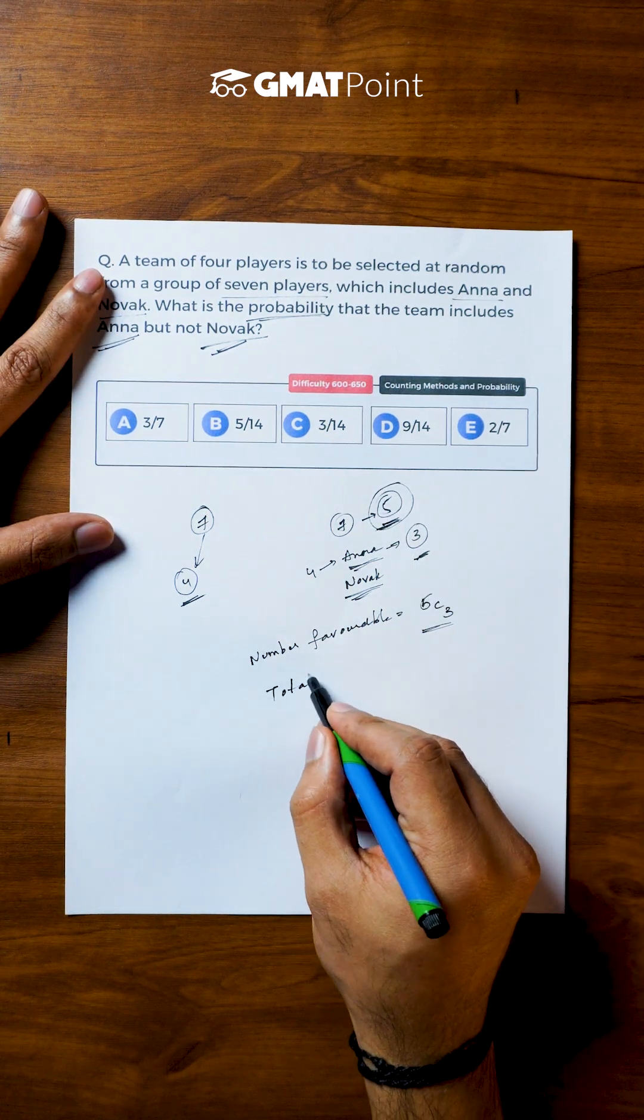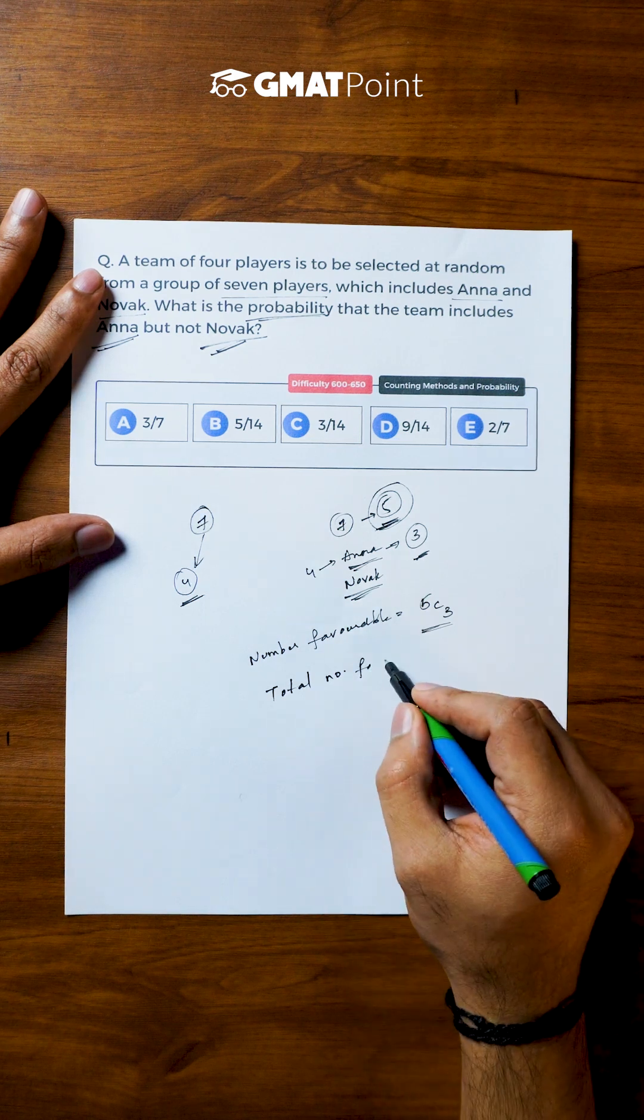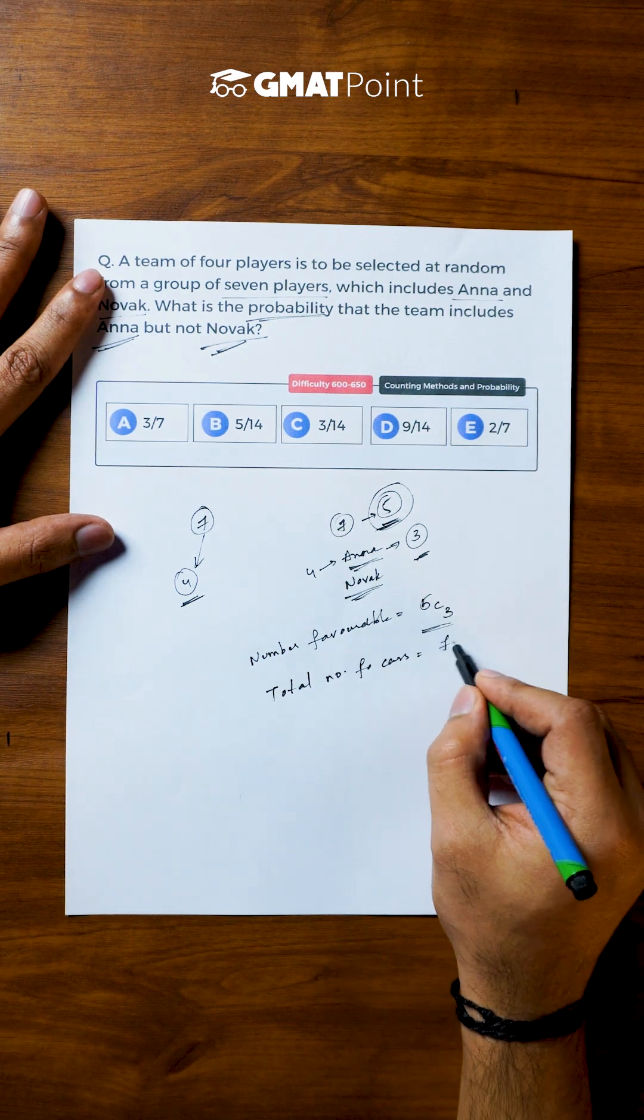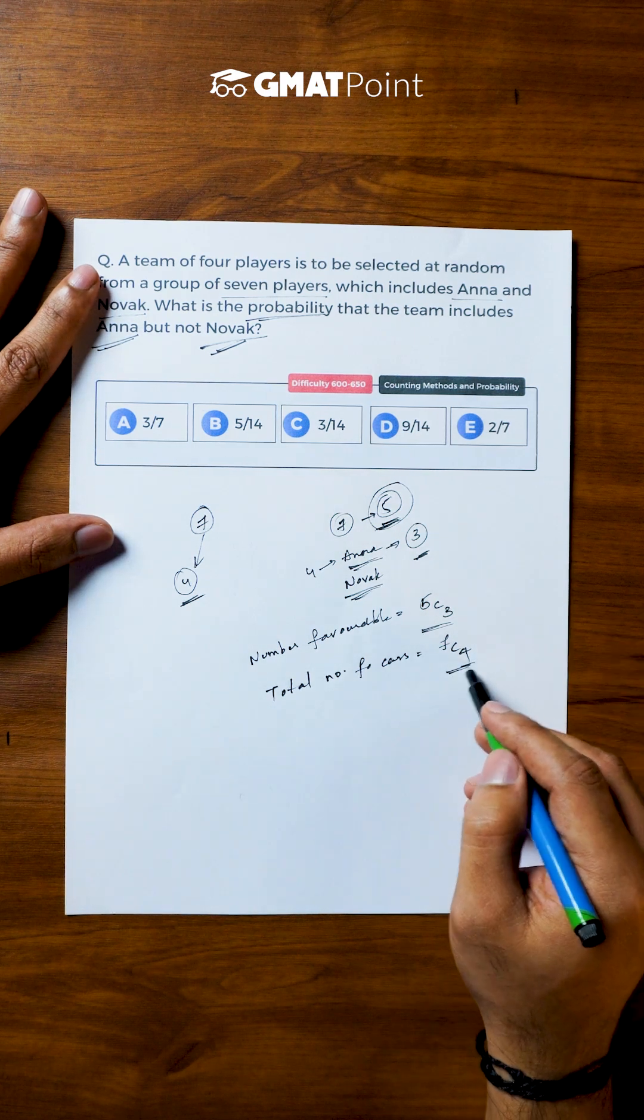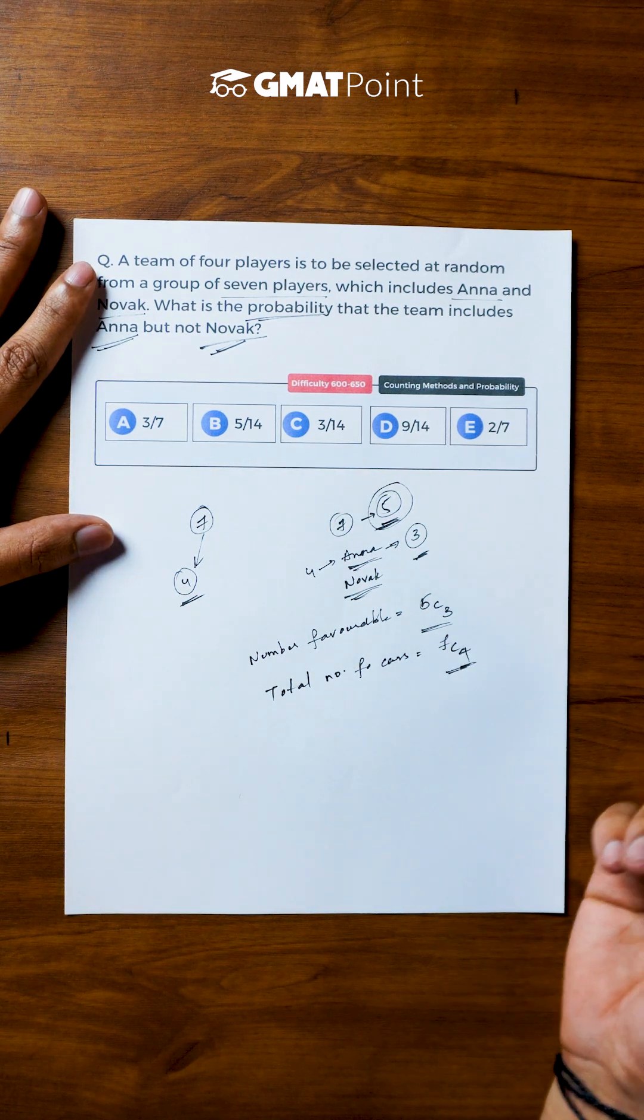The total number of cases is equal to 7C4 because in total we are calculating the number of ways to select 4 members out of the 7 members.